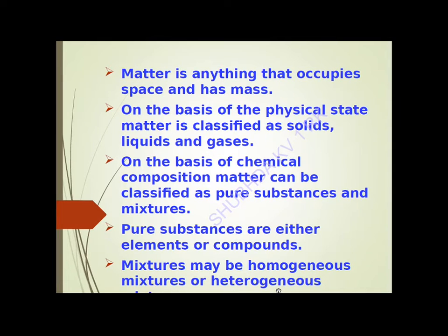Mixtures can be homogeneous or heterogeneous. A homogeneous mixture has uniform composition throughout — meaning you cannot identify the individual parts of the mixture. For example, the soft drinks or lemonade you drink. In lemonade, can you identify where the sugar is, where the salt is, where the drops of lemon are, and where the water is? No, you cannot identify the individual parts of the mixture by seeing it.